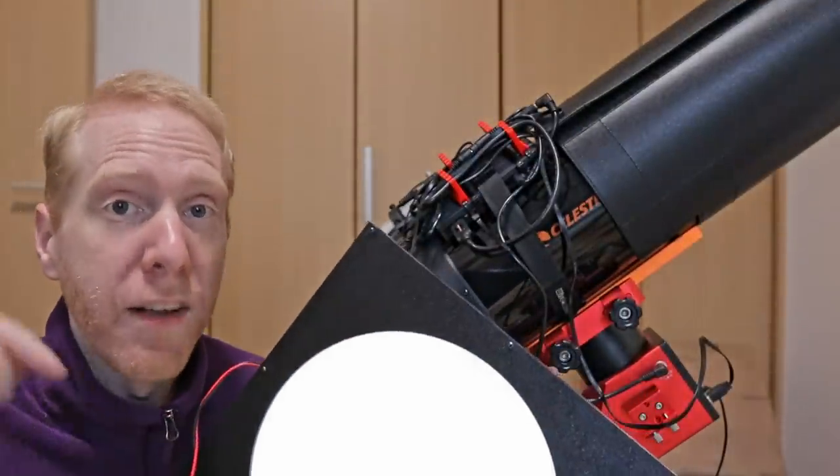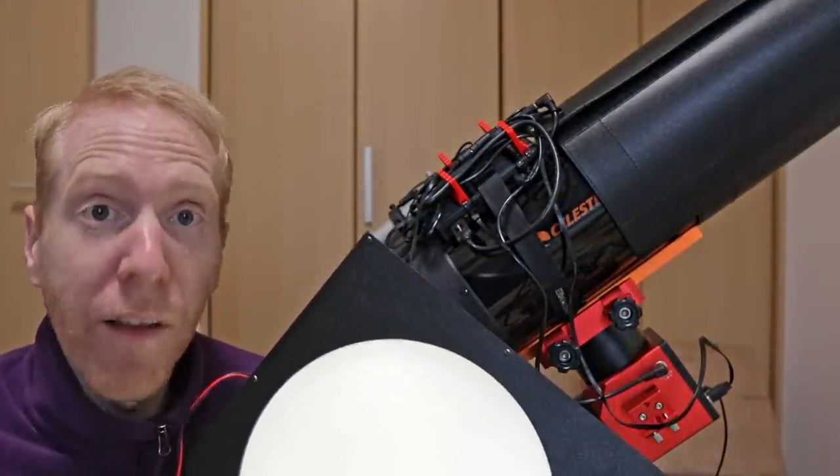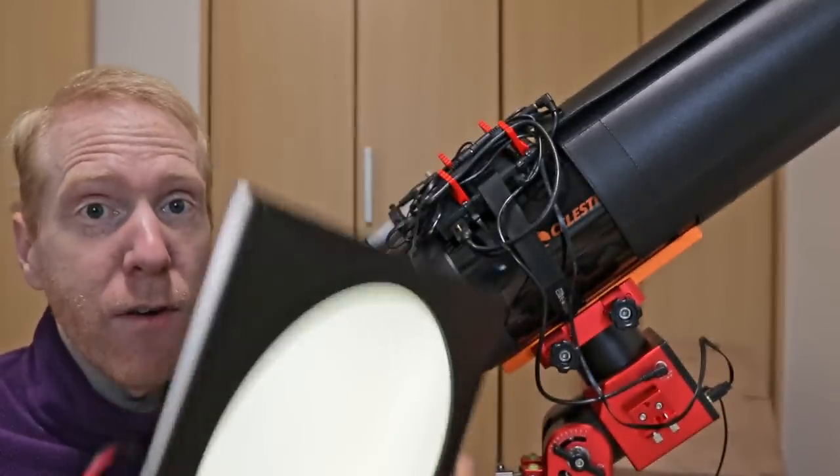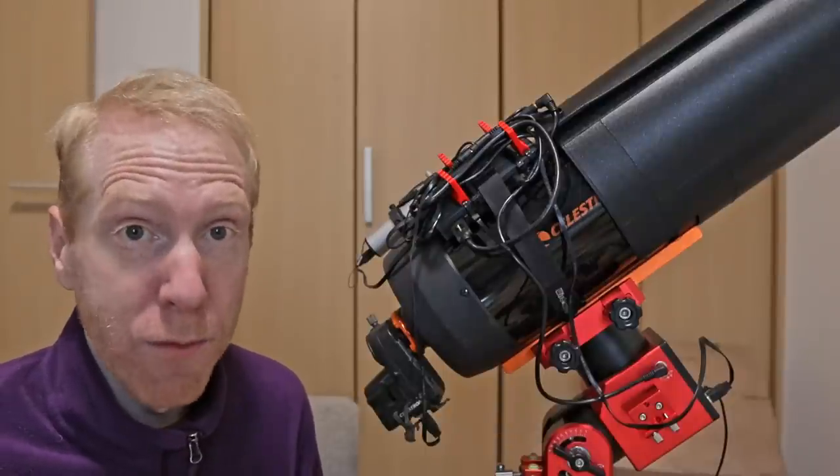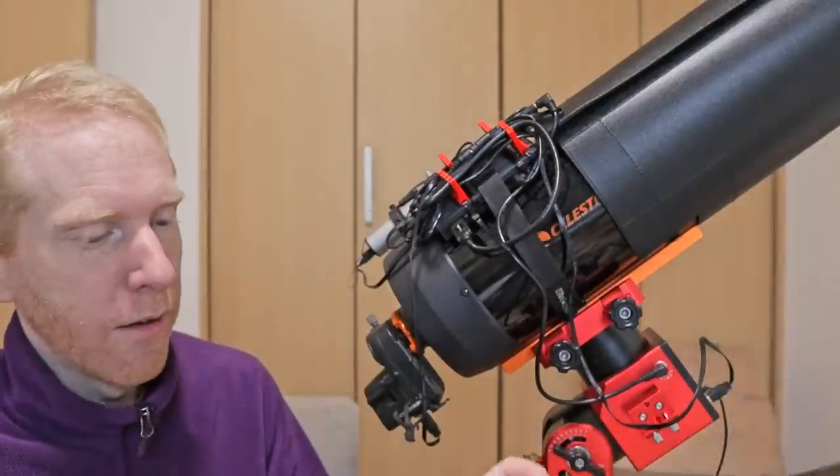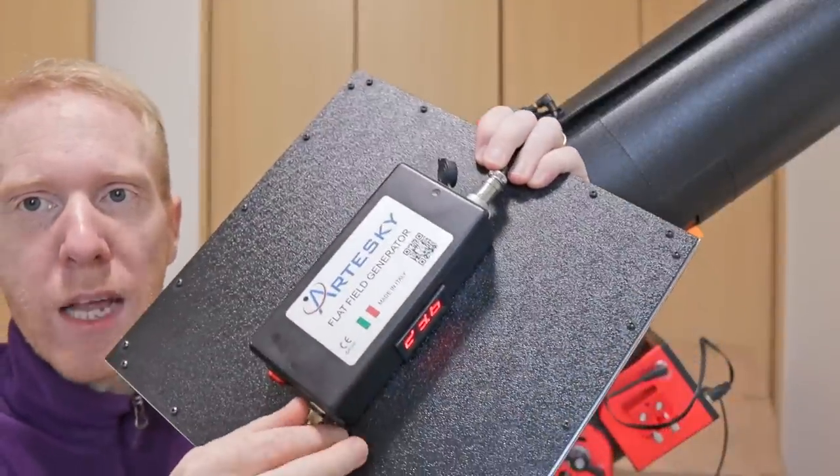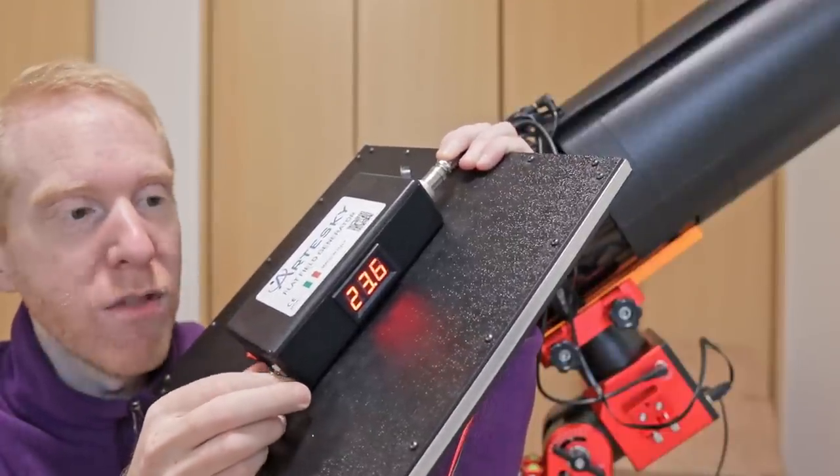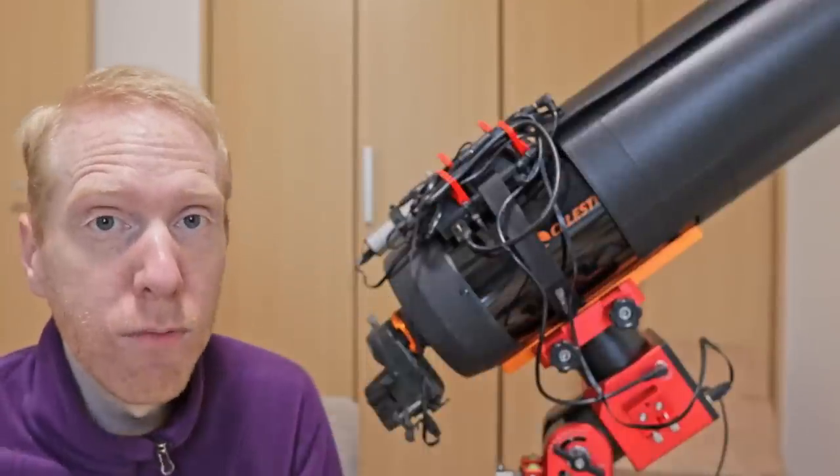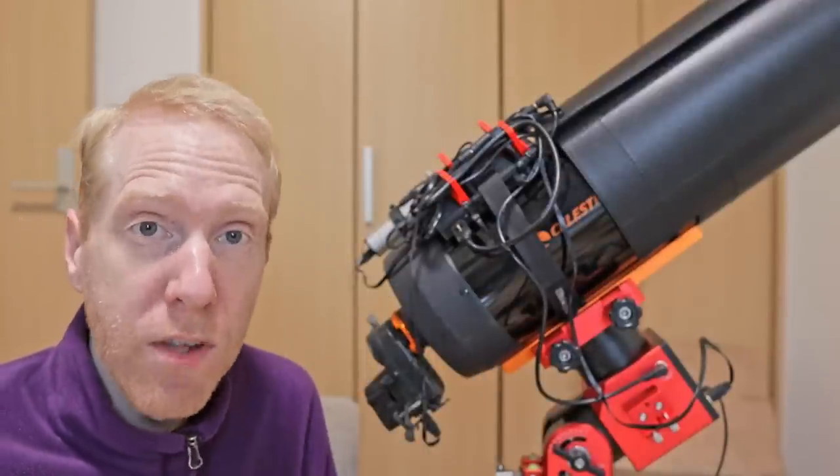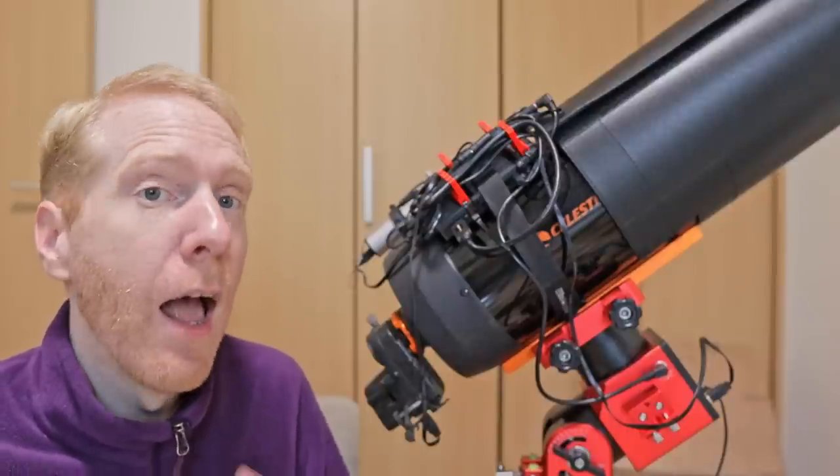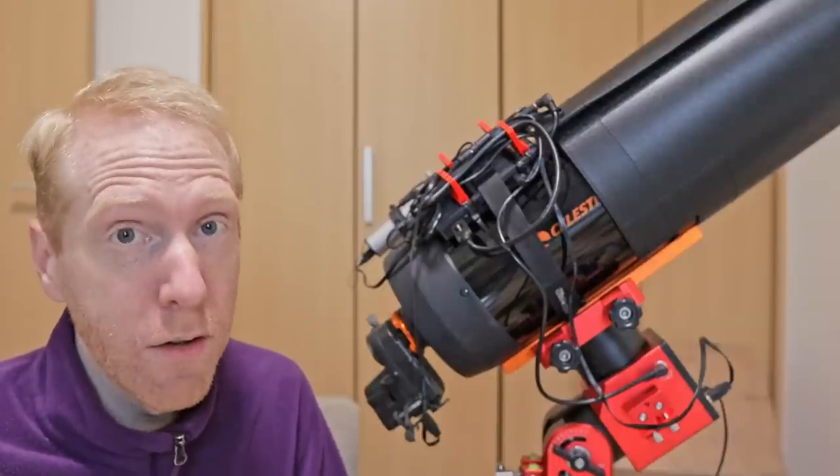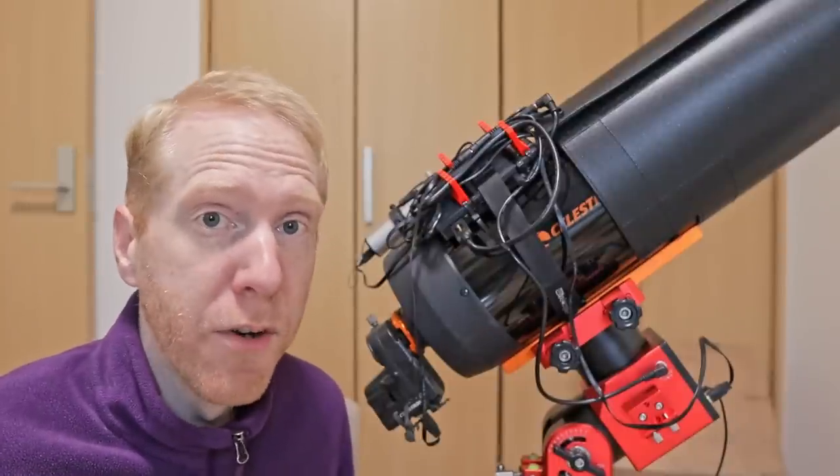I will put links down in the description for all of the items including this one. Note that this is the expensive variety because it is made for astrophotography and it has a knob to really adjust the light that makes it through the flat field generator, which is very useful when you want to target a specific exposure length for your flats across various filters.